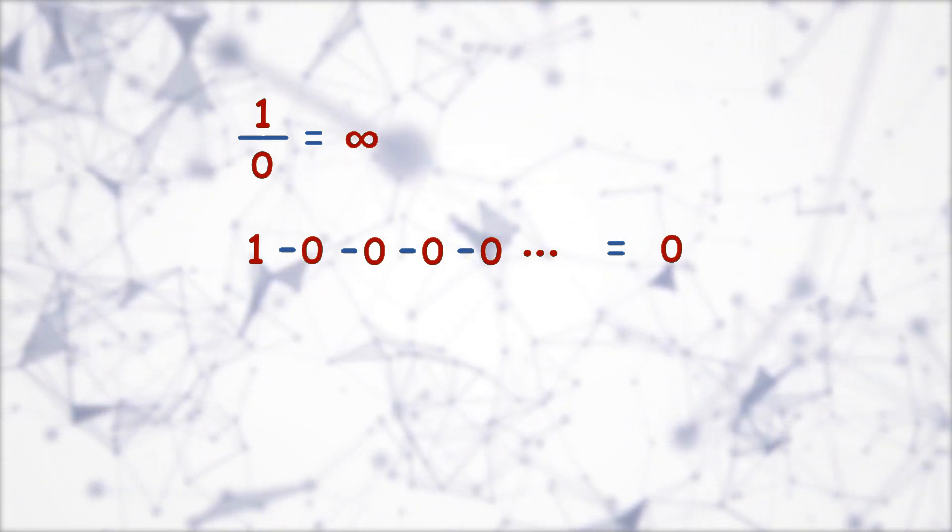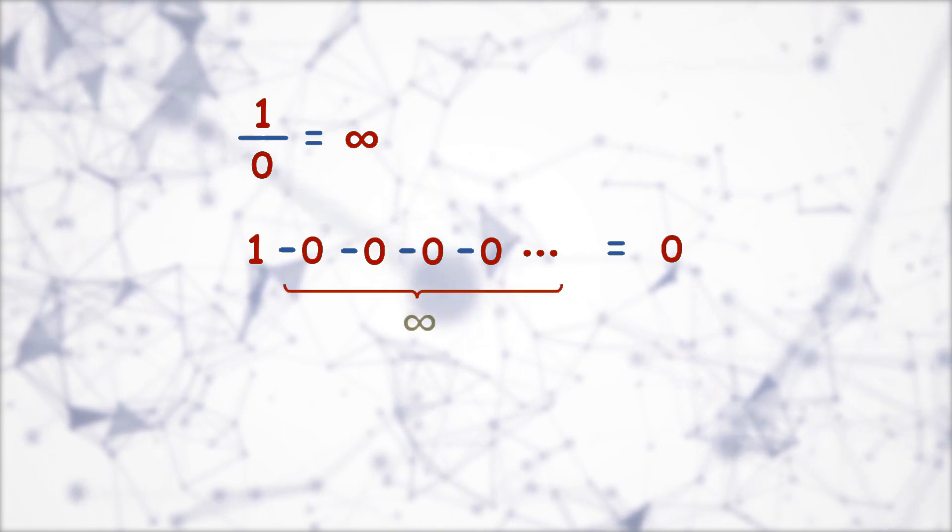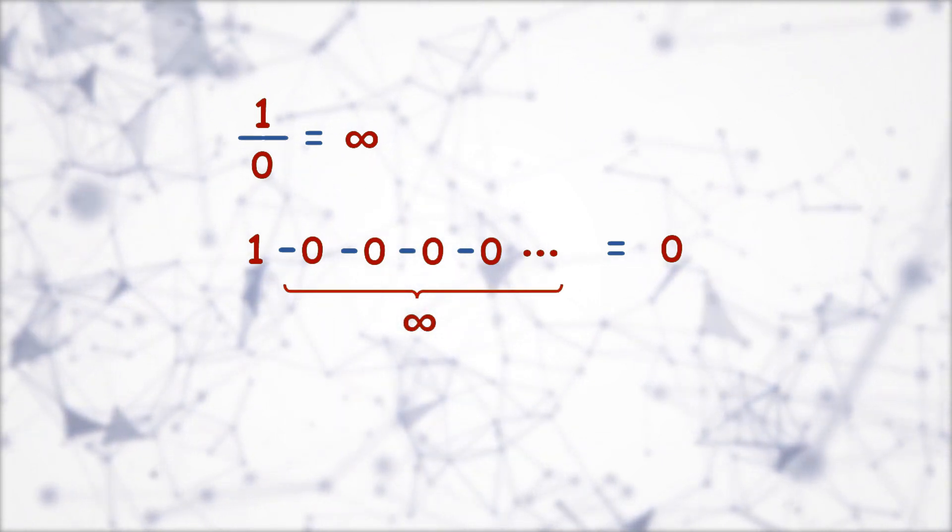But we know that 1 by 0 is infinity. So 0 must be subtracted infinite times from the equation to get 0.